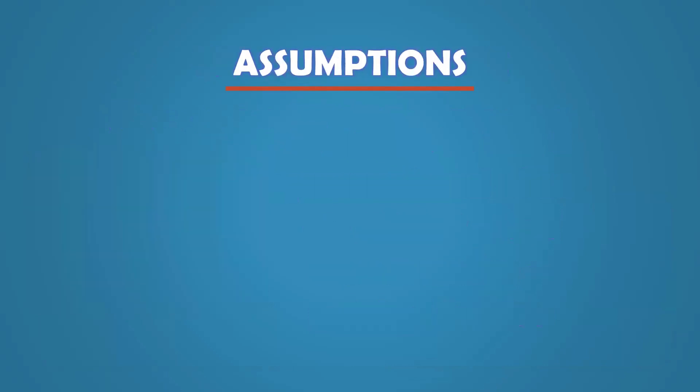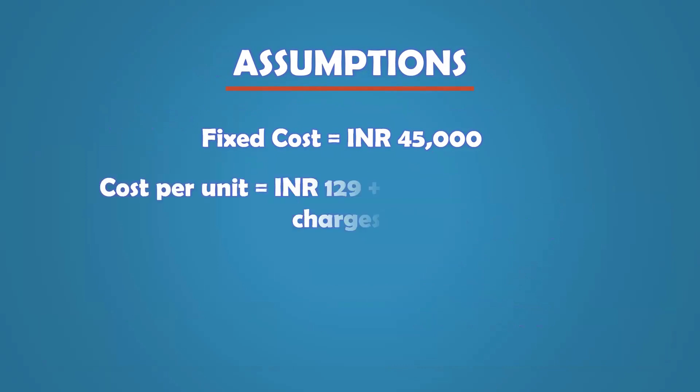So what are the assumptions for this campaign? There's a fixed cost of INR 45,000 for the company to run the campaign, covering resource costs and everything else. The cost per unit — what the company has to spend to manufacture or procure every t-shirt — is 129 Indian rupees, and there's a shipping charge of 49 rupees per order.